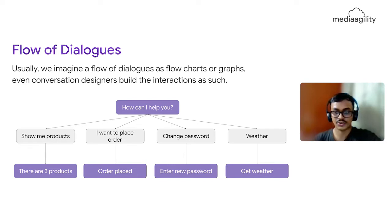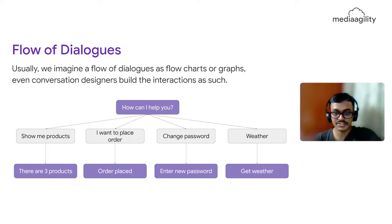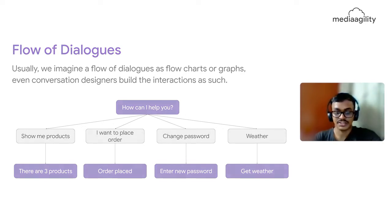Usually, how we design conversational experiences is like a graph. When a user enters a section — say, the products of your company — they should stay in that particular module. Similarly, if it is a completely different topic, they should stay in that context. So when a person asks to change their password, they should not get a weather report. This is how conversational designers build interactions, and that is where Dialogflow CX and state machines come in.